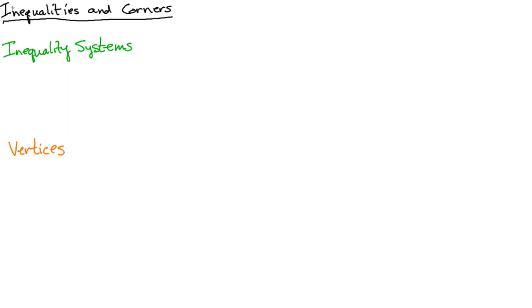Hello and welcome to inequalities, systems of inequalities, and the corners of those systems. This is much nicer than the word problems you've done previously. Here you're just going to put two things together that you've already learned: number one, inequalities — when you have variables and inequalities, you graph them by shading one side or the other of the line.